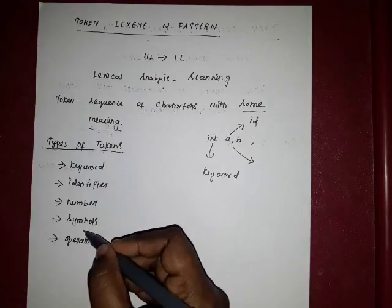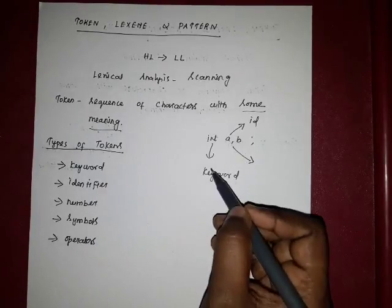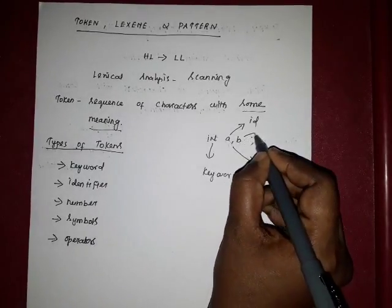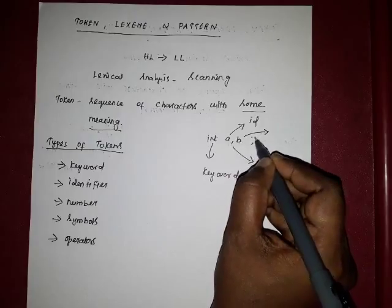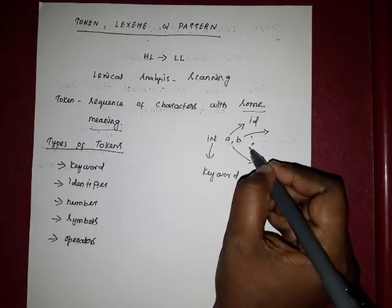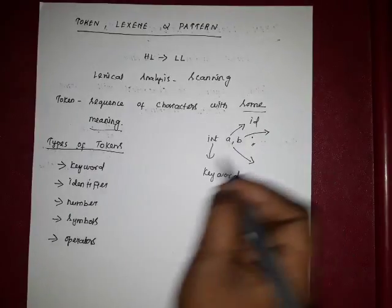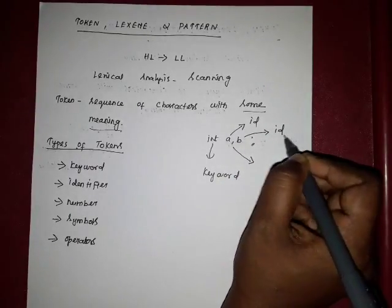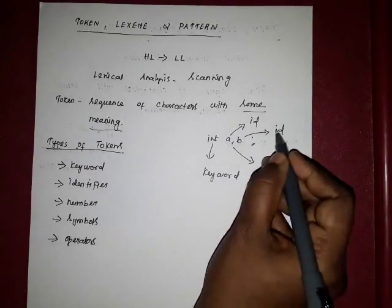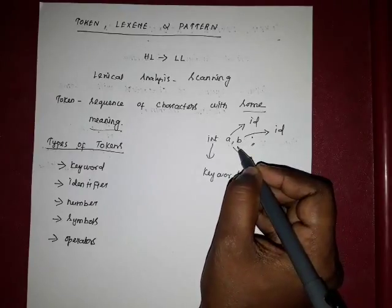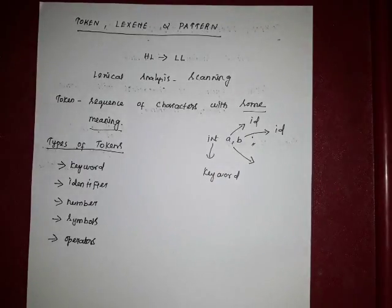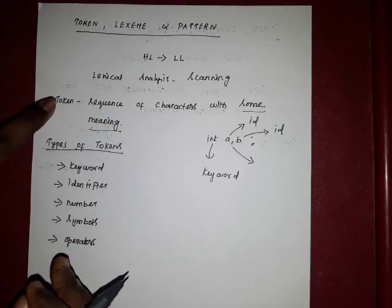The comma is a symbol, so symbol is the token type for comma. Next, lexical analysis reads 'B'. 'B' is a group forming a token. 'A' and 'B' are variables, so their token type is identifier, denoted as ID. So ID is the token for B. The source program is the input to lexical analysis, which scans left to right to identify the token.